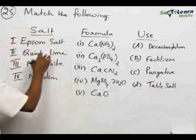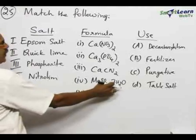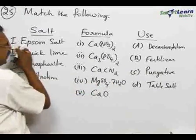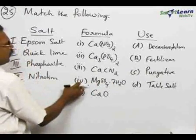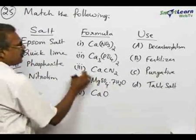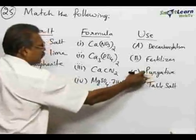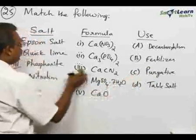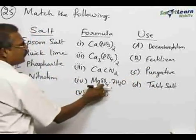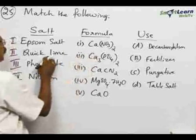Let us analyze. Epsom salt is MgSO₄·7H₂O. Therefore, column 1 and formula 4 match, and Epsom salt is used as a purgative. So these three should be matched: Epsom salt, MgSO₄·7H₂O, and purgative.